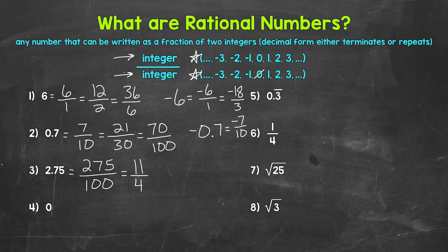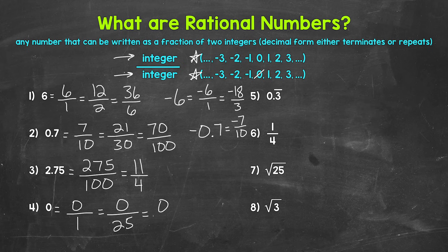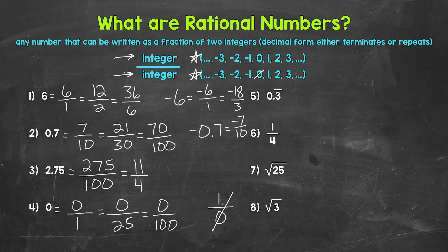Let's move on to number four, where we have 0. Is 0 rational? Yes — we can write 0 as a fraction of two integers. Now, if we have 0 in the denominator, say 1 over 0, this does not equal 0. Zero in the denominator gives us a value that is undefined, so that's not going to be rational. Something to keep in mind.